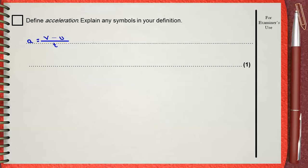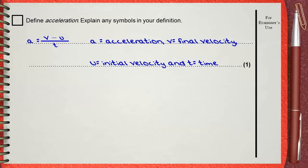V is the final velocity, u is the initial velocity, and t is the time. The mark scheme gives one mark.